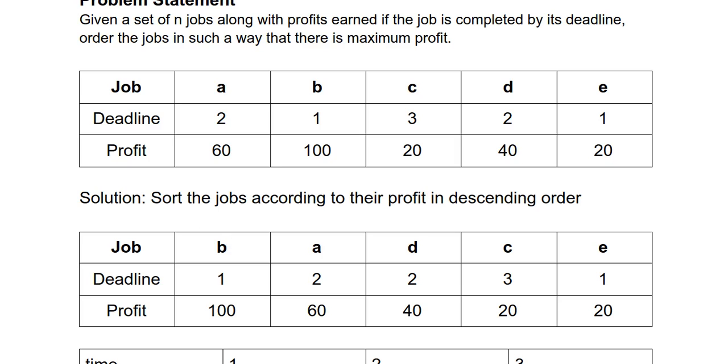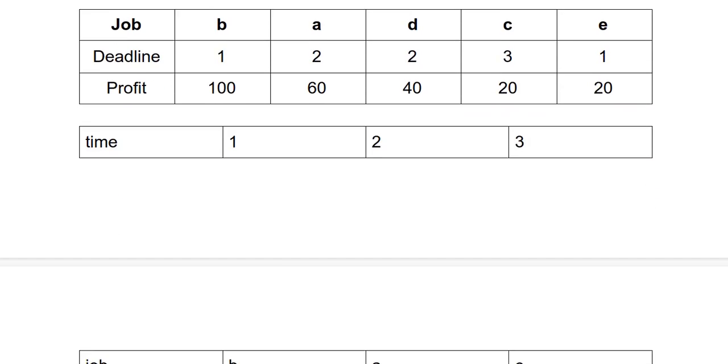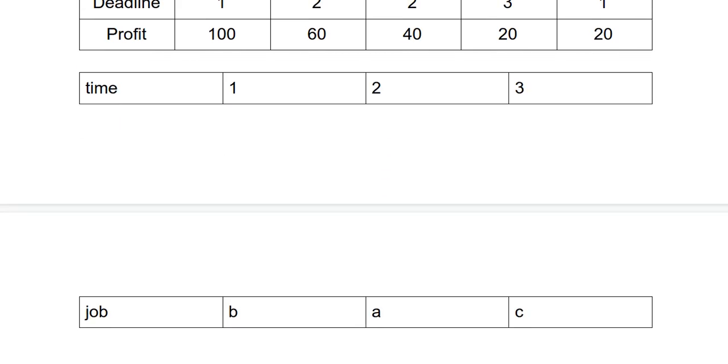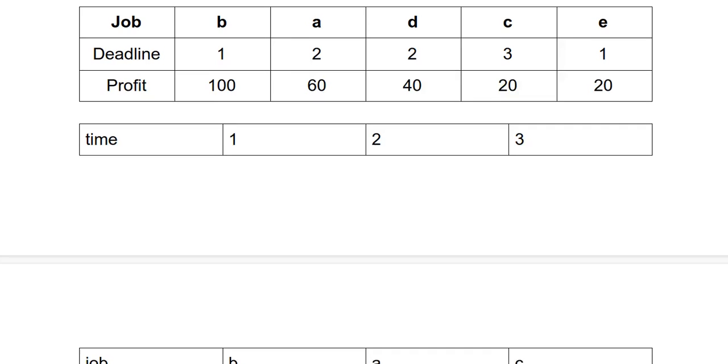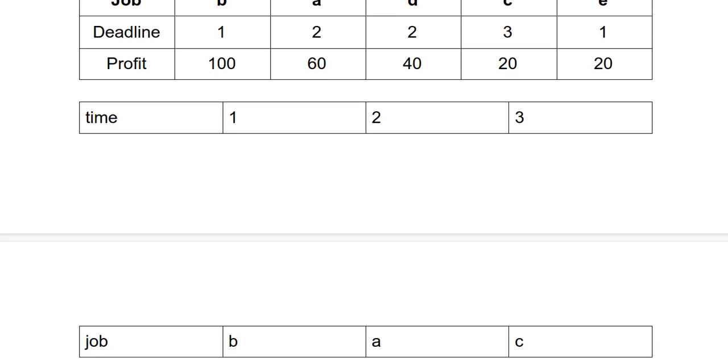So if we take the final output, it would be that we scheduled job b followed by a followed by c. So job b gave a profit of 100 rupees, job c gave a profit of 20, and job a gave a profit of 60. So in total our answer will be 180 rupees. Now let us look at the code for this problem.